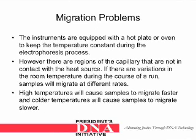The instruments are equipped with a hot plate or oven to keep the temperature constant during the electrophoresis process. However, there are regions of the capillary that are not in contact with the heat source. If there are variations in the room temperature during the course of a run, samples will migrate at different rates. High temperatures will cause samples to migrate faster, and colder temperatures will cause samples to migrate slower.